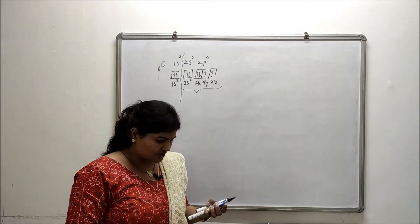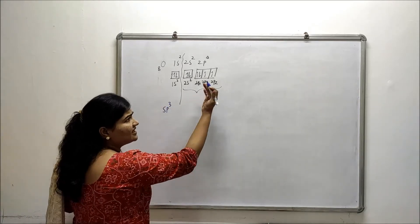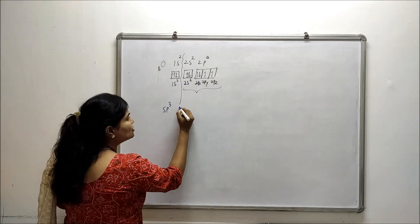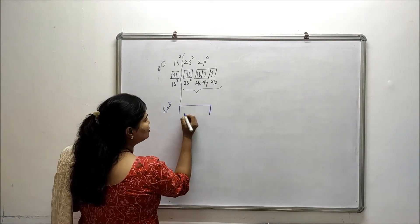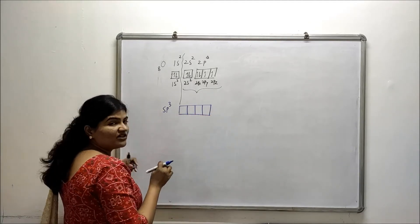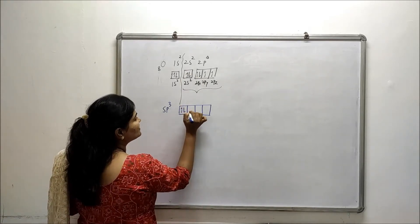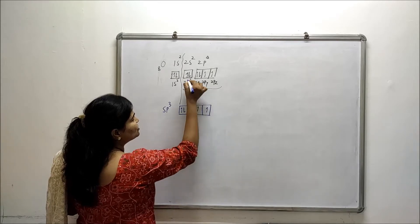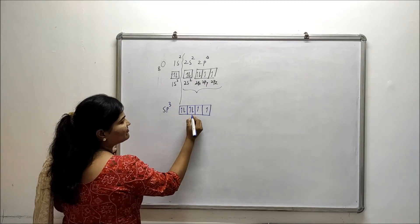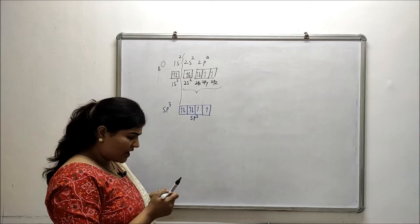When we talk about sp3 hybridization, we take one 2s and three 2p orbitals together. They combine to form sp3 hybrid orbitals with equal energy and equal shape. So the 2s and three 2p orbitals combine and form these sp3 hybrid orbitals.